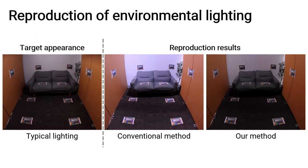We introduce a novel distributed optimization method for multiple projectors that determines the projector pixel values to accurately reproduce the illuminance and chromaticity incident on surfaces under typical luminaires. Leveraging the spatially low-frequency nature of environmental lighting, this technique computes pixel values more efficiently than a conventional pixel-wise radiometric optimization framework. Furthermore, this method takes into account the inter-reflection of projected light between adjacent surfaces.